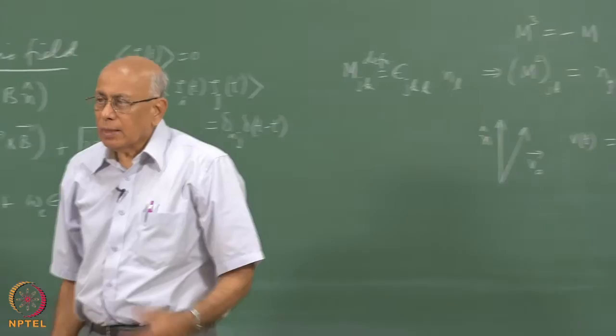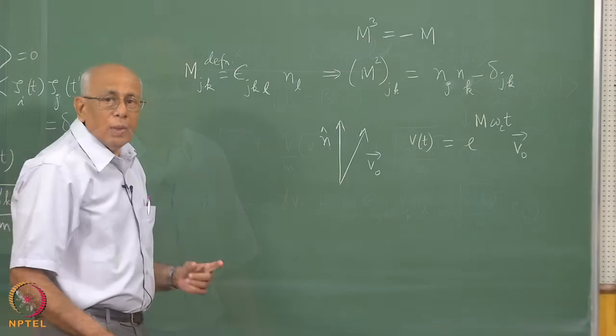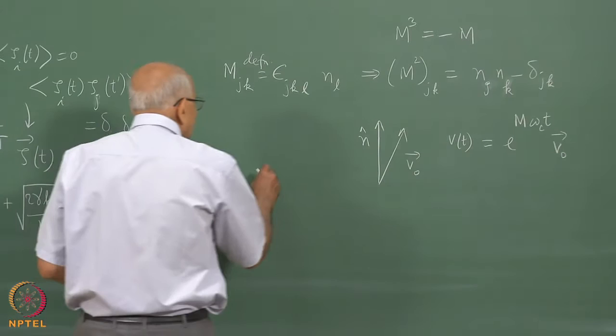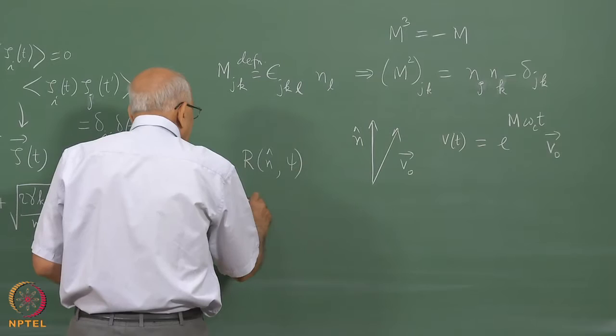The three eigenvalues of the rotation matrix are 1, e^(+i·psi), and e^(-i·psi). Certainly 1 must be an eigenvalue because rotating about direction n leaves any vector along n unchanged. The other two eigenvalues are complex conjugate pairs on the unit circle, since rotation preserves all distances.